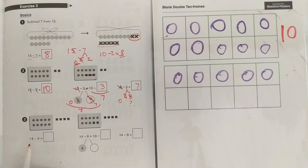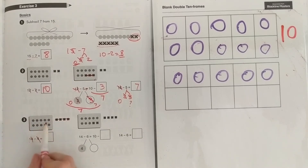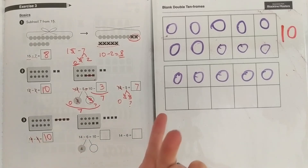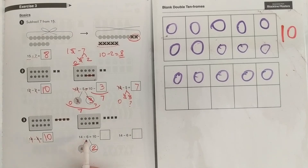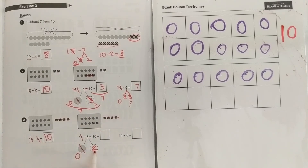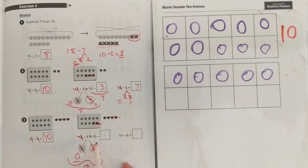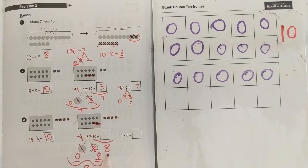Let's look at number 3. 14 minus 4: take away the 4 from the 4 — easy peasy, what's left is a 10. 14 minus 6: the number 6 has a 4 and a 2. Take the 4 from the 4, you get 0. Subtract the 2 from the 10. What's left is your 8. Add those leftovers, your answer is 8. If this side of the equation is 8, this side also has to be 8. 10 minus 2 is 8. 14 minus 6 is 8.